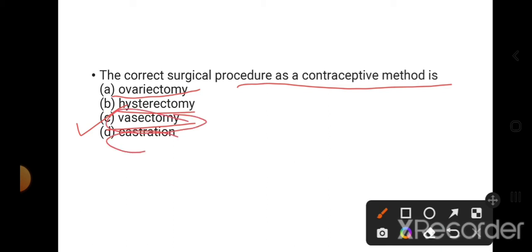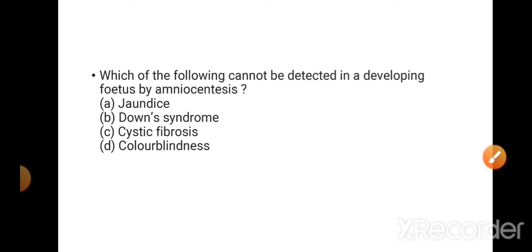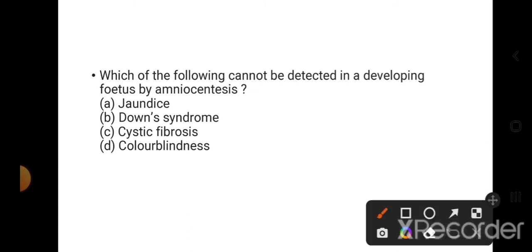Which of the following cannot be detected in a developing fetus by amniocentesis? By amniocentesis, jaundice cannot be detected. Down syndrome, cystic fibrosis, and color blindness can be detected by amniocentesis.